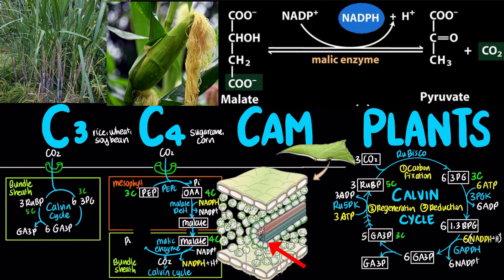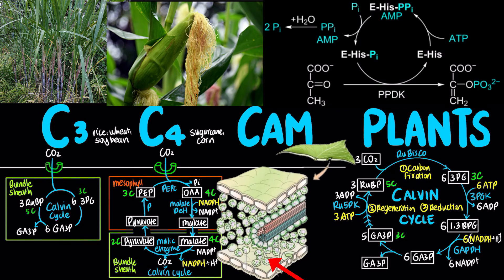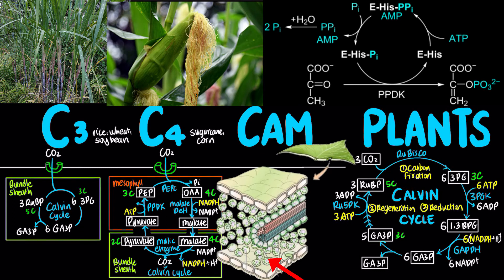Malic enzyme also reduces NADP+ to NADPH. Next, pyruvate travels back to the mesophyll cell, where it is reconverted to phosphoenolpyruvate by the unusual enzyme pyruvate phosphate dikinase, which simultaneously phosphorylates pyruvate to phosphoenolpyruvate and phosphate to pyrophosphate. This reaction involves the hydrolysis of two high-energy phosphate bonds to regenerate phosphoenolpyruvate.